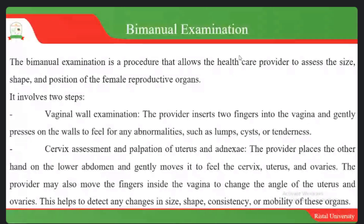The second step involves cervical assessment and palpation of the uterus and adnexa. The provider places the other hand on the lower abdomen and gently moves it to feel the cervix. Midwives and gynecologists say that our eyes are in our fingers — when you insert your fingers, you can comprehend what is happening inside the vagina or with the cervix, feeling for the uterus and ovaries during palpation.